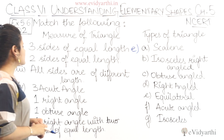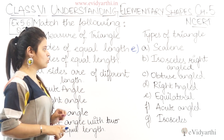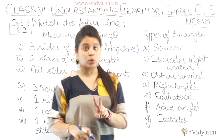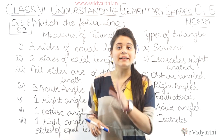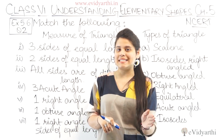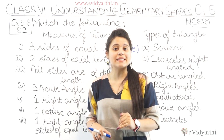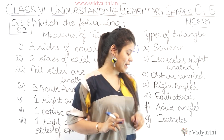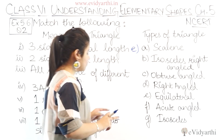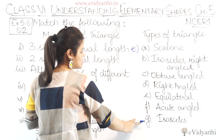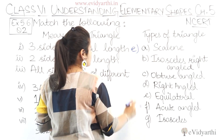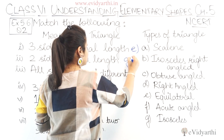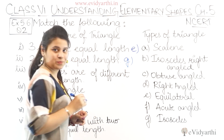Next is two sides of equal length. Now two sides are equal in one triangle. So it is an isosceles triangle. So here we have G part — isosceles triangle. So we write G here.